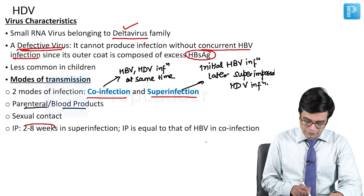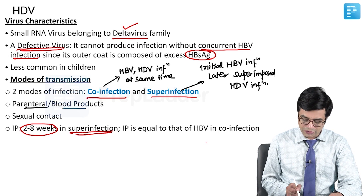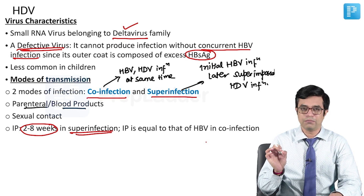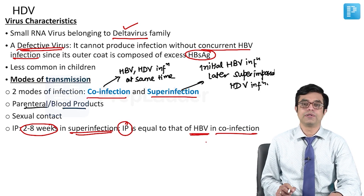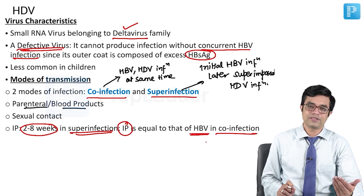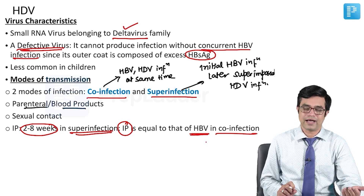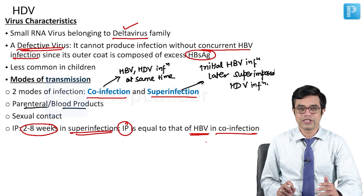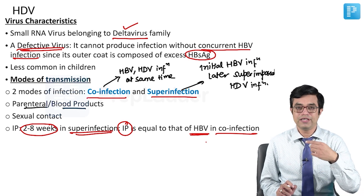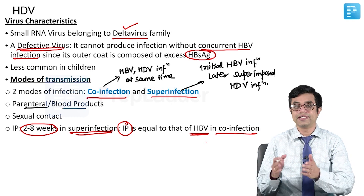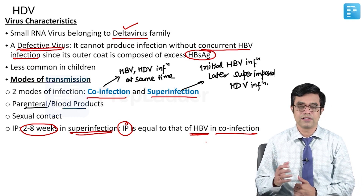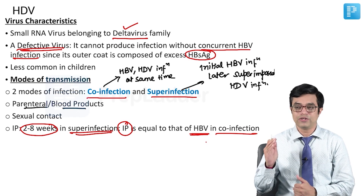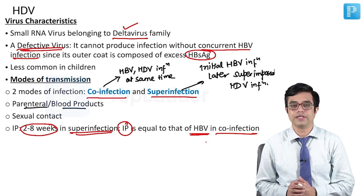The incubation period is 2 to 8 weeks in cases of super-infection where it can be directly measured. In co-infection, the incubation period depends on that of hepatitis B virus. In super-infection, ready-made HBsAg is already present. In co-infection, HDV must wait until HBV's incubation period is over and it starts producing significant antigen products — only then will HDV begin assembling its viral products and produce clinical features.